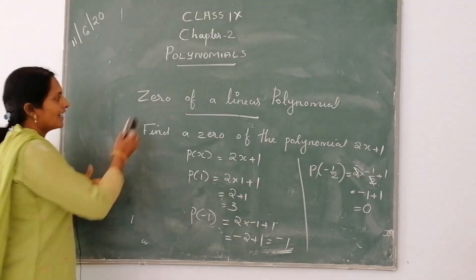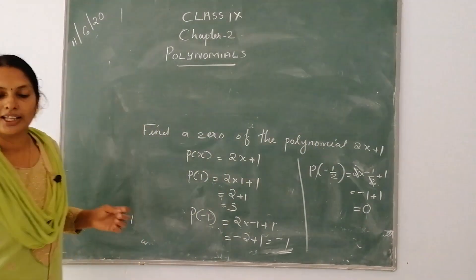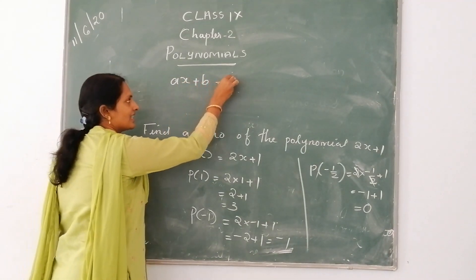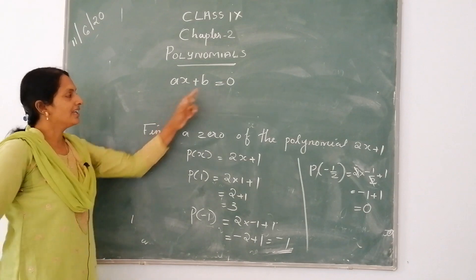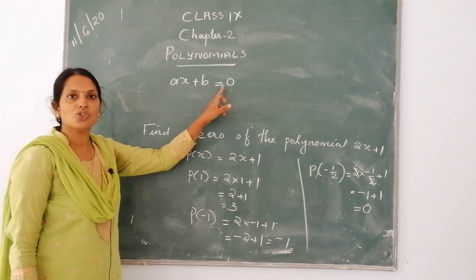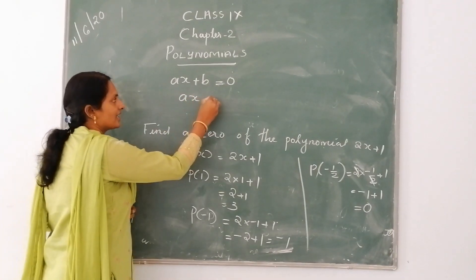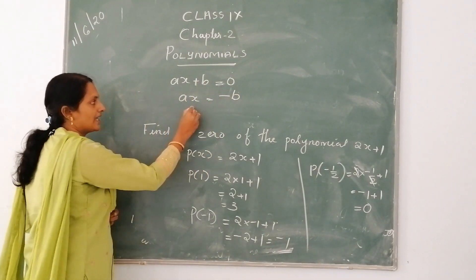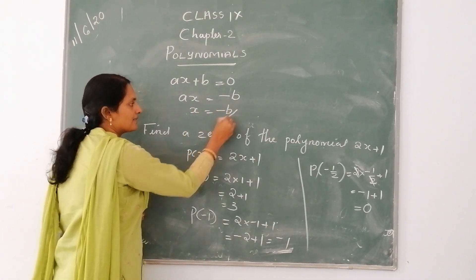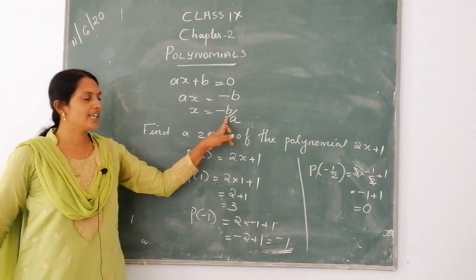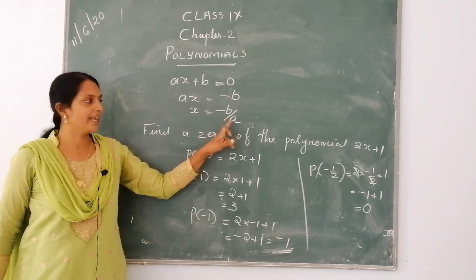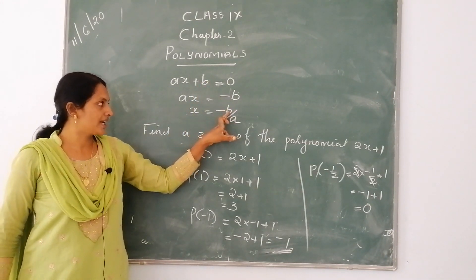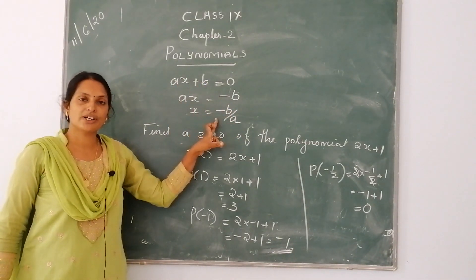What is the general form of a linear equation? That is ax plus b. Then that is set equal to 0. So ax is equal to minus b, transposing b to the right-hand side. Then x is equal to minus b by a. Minus b means the negative of the constant term, and a is the coefficient of x.